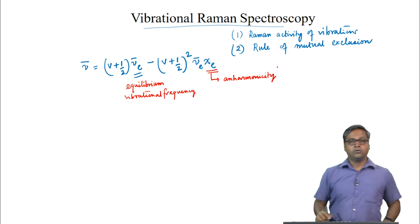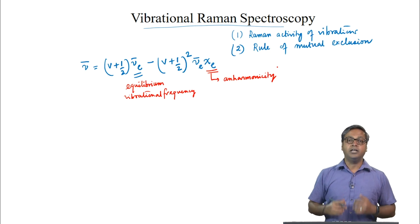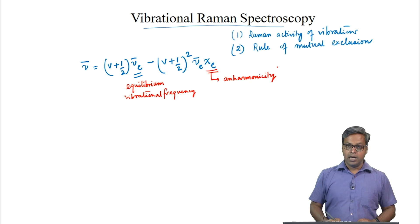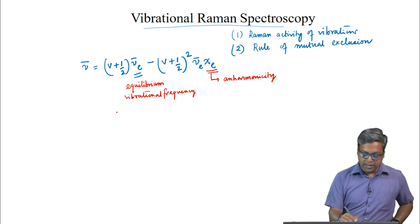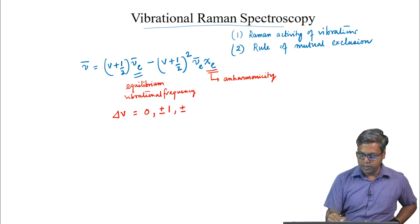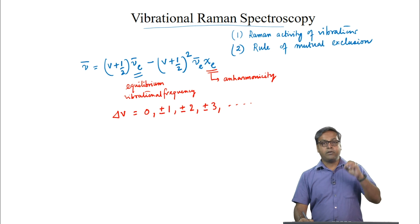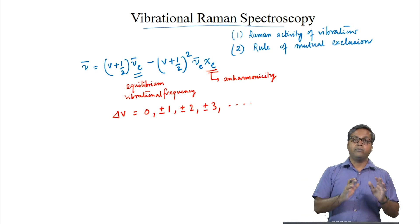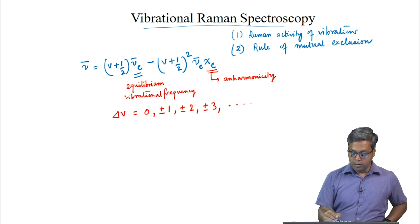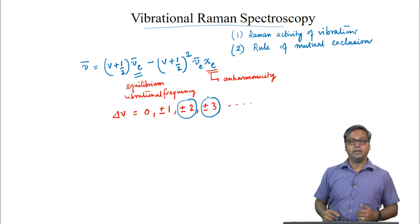This is a general expression independent of the shape of the molecule or the nature of the vibration. The selection rule is delta V = 0, ±1, ±2, ±3, and so on. The selection rule is the same for Raman as for infrared spectroscopy, and the probability of ±2 or ±3 transitions decreases rapidly.